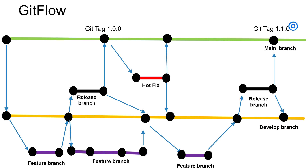If after deploying to production you find an issue — meaning the application is breaking or there is a critical bug needing a hotfix — you will create a hotfix branch from the main branch, make those changes, test it, merge back to the main branch, and cherry-pick those changes into the develop branch as well. The same process continues for further releases.